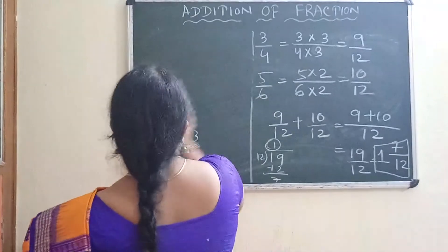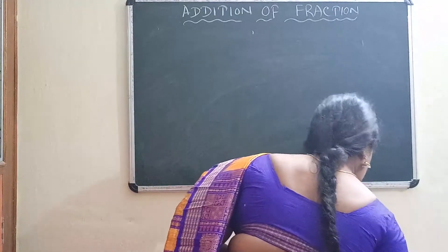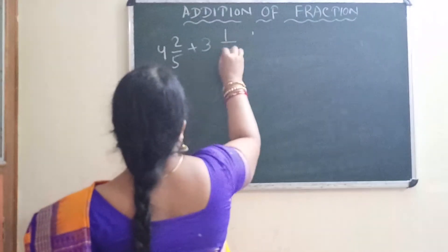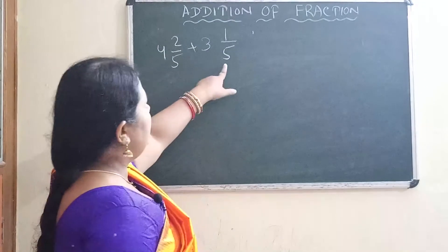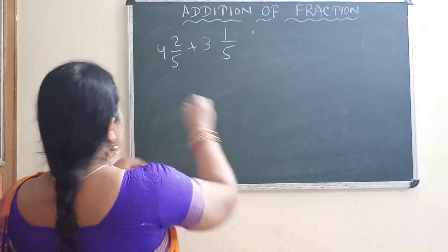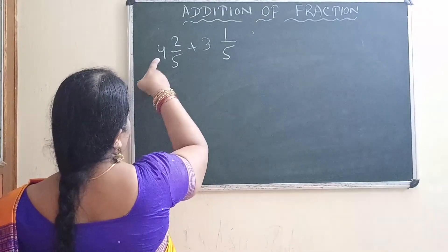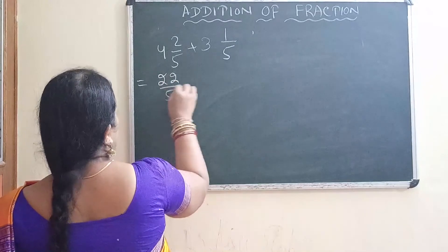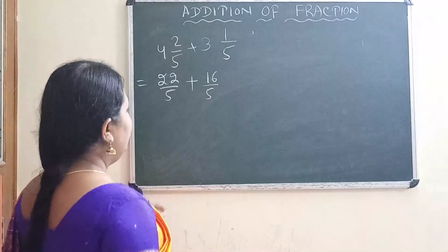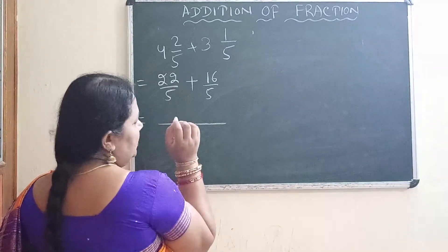Now, if mixed fractions are given — for example, 4 whole 2 by 5 plus 3 whole 1 by 5 — both denominators are the same, but these are mixed fractions. So first convert to improper fractions. 5 fours are 20 plus 2 gives 22 by 5. And 5 threes are 15 plus 1 gives 16 by 5. Now we have both as improper fractions and both are like fractions.